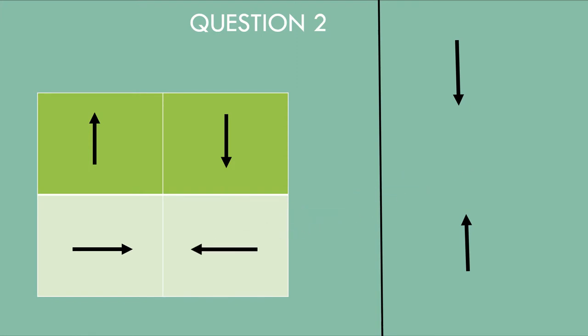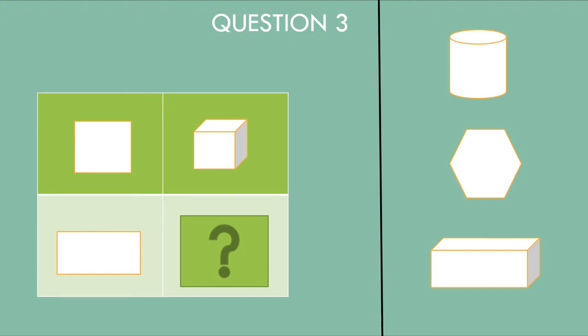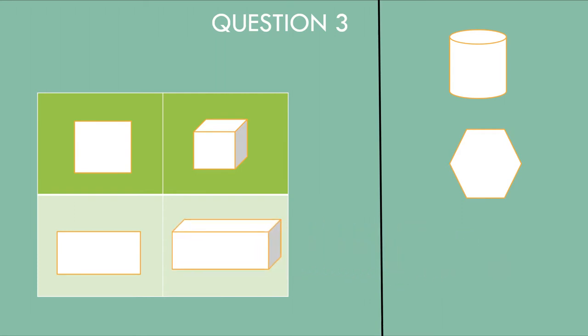Question number 3. We have a square, and then it is a cube. We have a rectangle and we have an option. What is the relationship between square and cube? Square is two-dimensional. A cube is all sides of squares — it is three-dimensional. So that is a rectangle. A rectangle's three-dimensional object is a cuboid. So the answer is: a rectangle becomes a cuboid, three-dimensional.